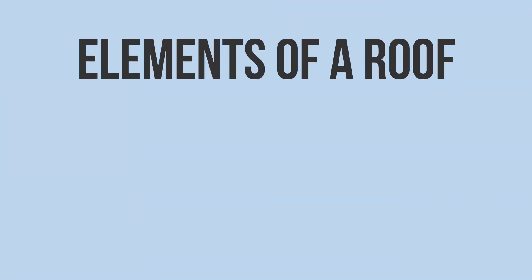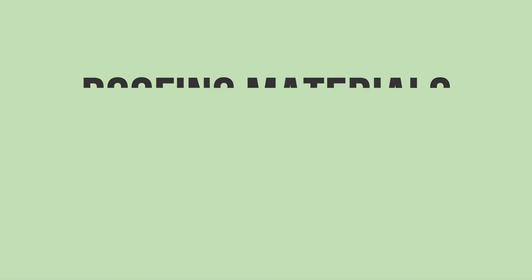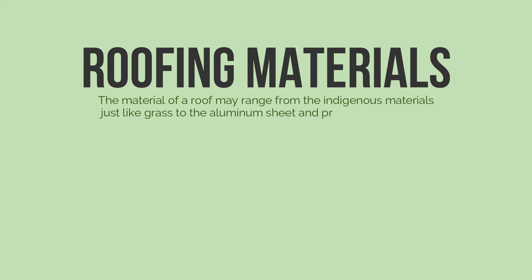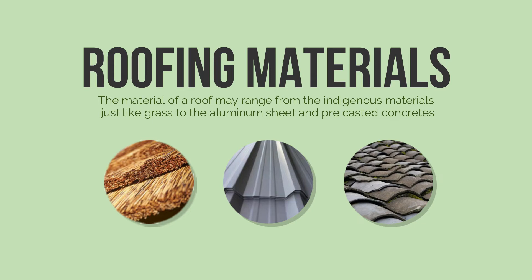We have three elements in the design of a roof. We have the construction, which is the method; the durability, which deals on the strength of the roof to withstand its form; and the material. The material of a roof may range from indigenous materials just like grass, to aluminum sheet and pre-casted concrete.